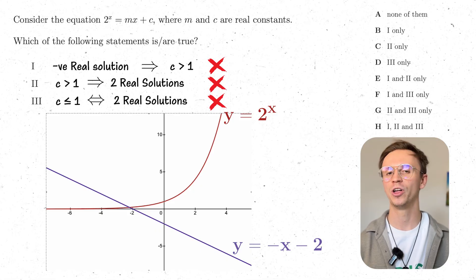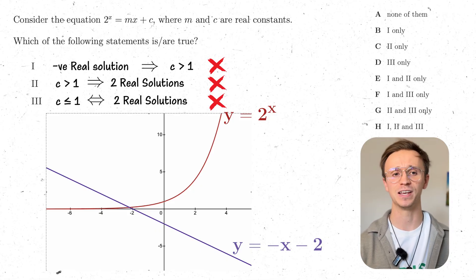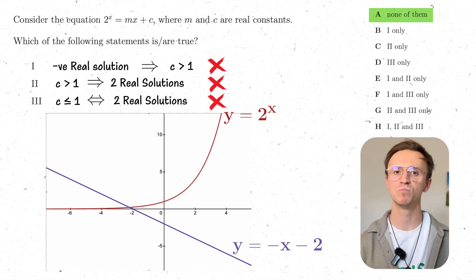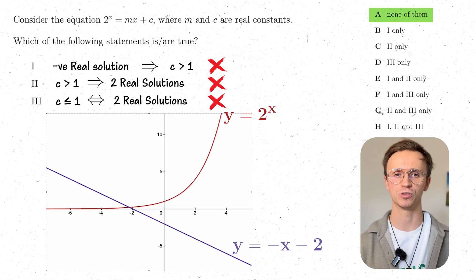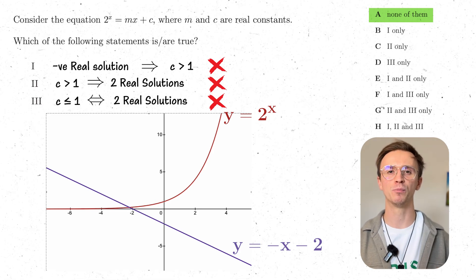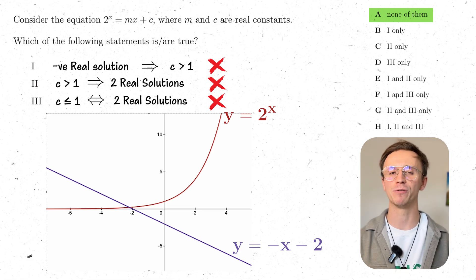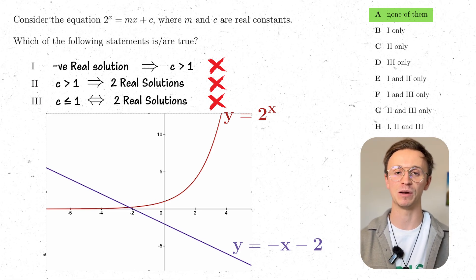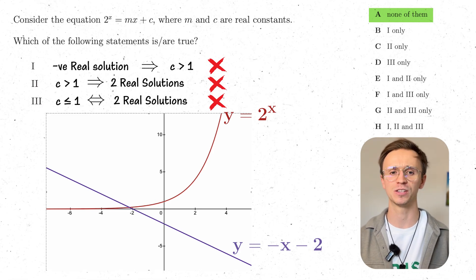The correct answer for this TMUA question is that none of the options are true. You can see how breaking down the if and only if statements — and testing with counterexamples — guides the approach.